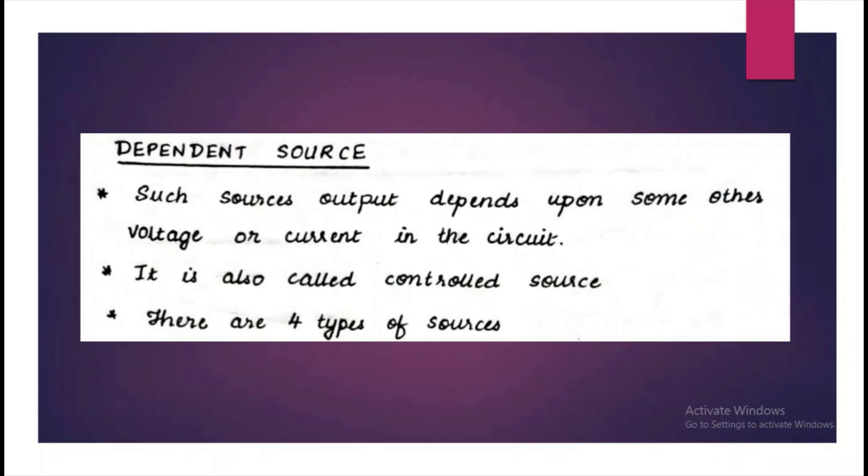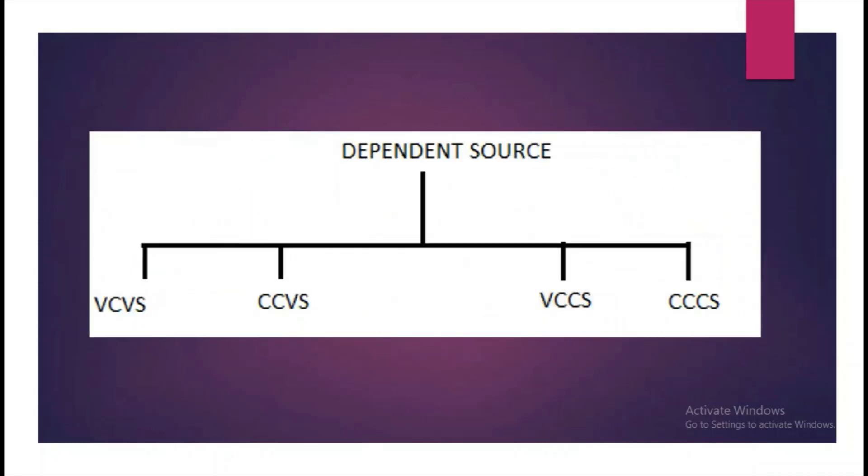Dependent sources are those sources in which output depends on some other voltage or current source. They are also known as controlled source. There are four types which we will learn about them in detail. This is the classification.